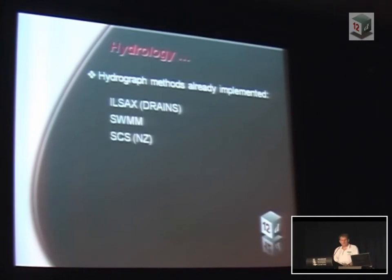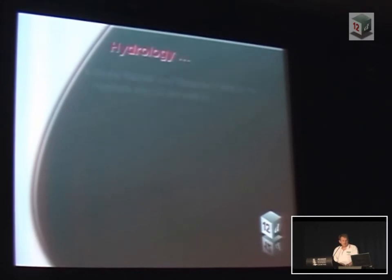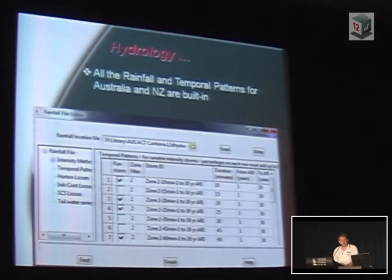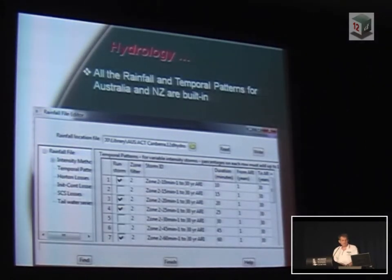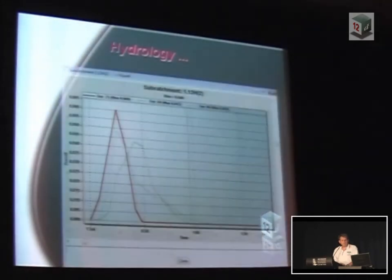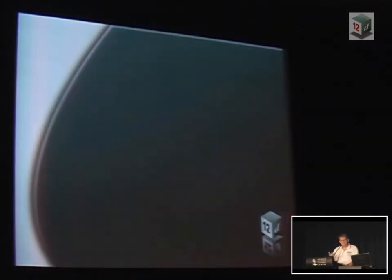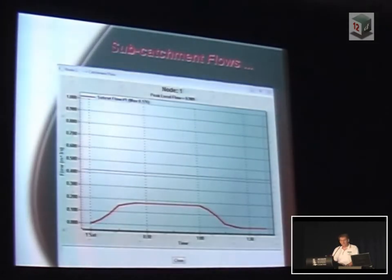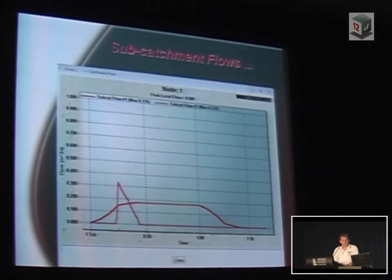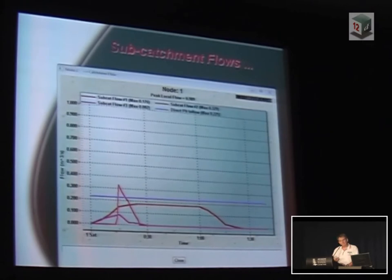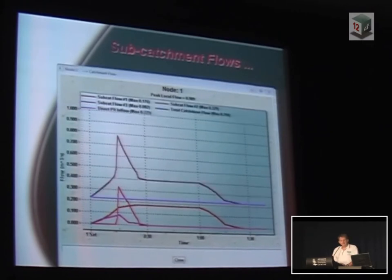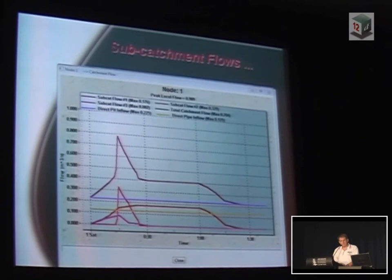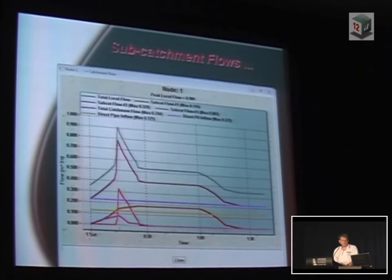The hydrograph methods we've currently implemented include ILSACS, the DRAINS version, SWMM for the US, SCS for New Zealand and the US as well, and FEH for the UK. We're building all the rainfall patterns for Australia and New Zealand. We generate hydrographs from multiple sub-catchments, add them together, add a pit inflow, add a pipe inflow, and then we get our local catchment flow — and this is what we route through our network.